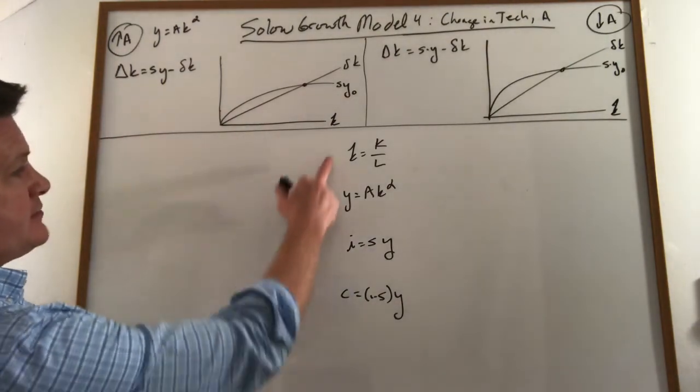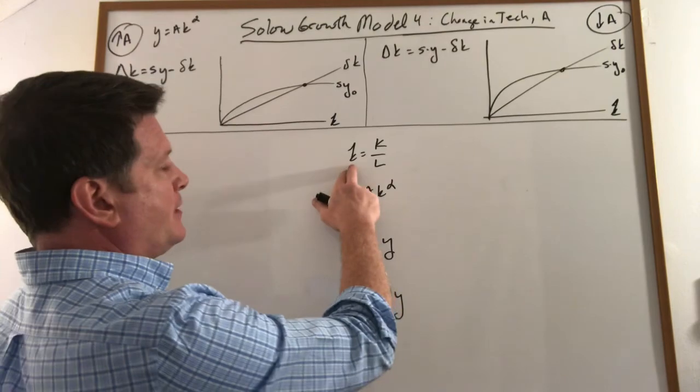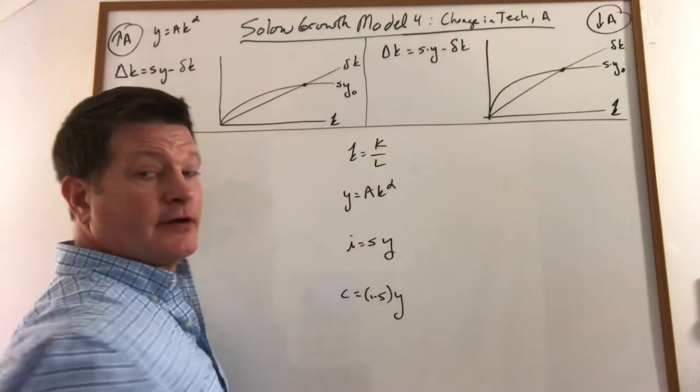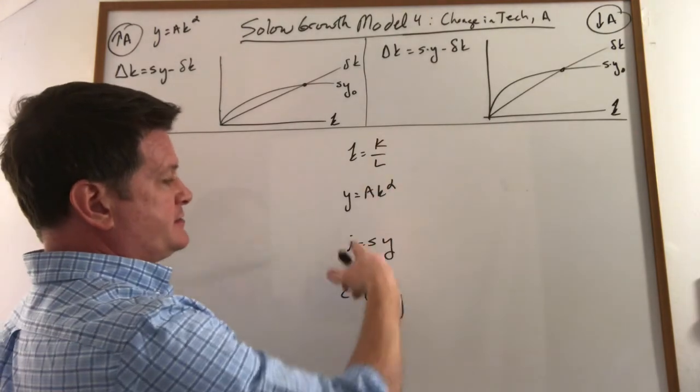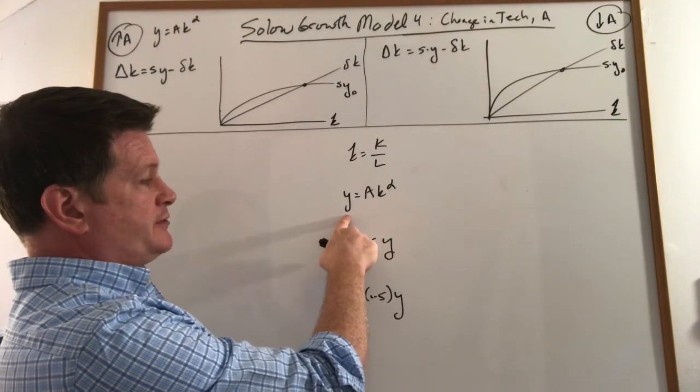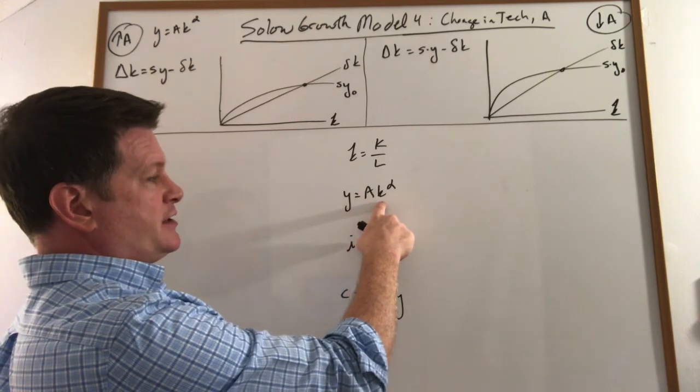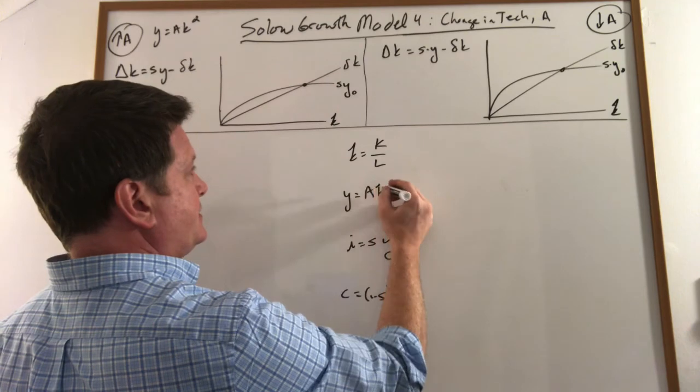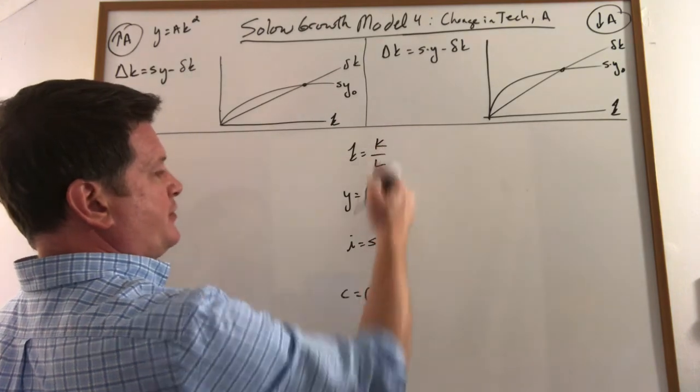I've put up here as much of the basic notes as we need. So these are our key equations. Capital per worker is total stock of capital divided by the number of workers. Everything is in per worker terms. So this is GDP or output or production per worker: technology times capital per worker. These are lowercase Ks, and that's an uppercase K.